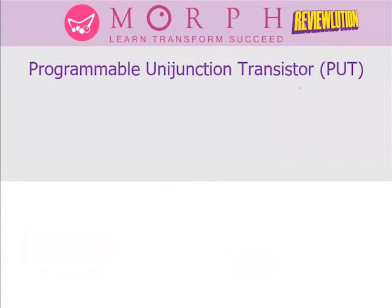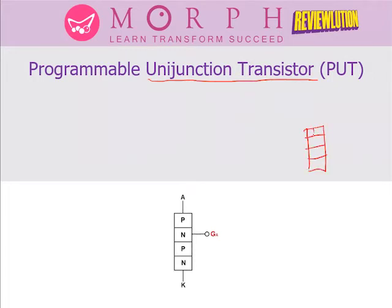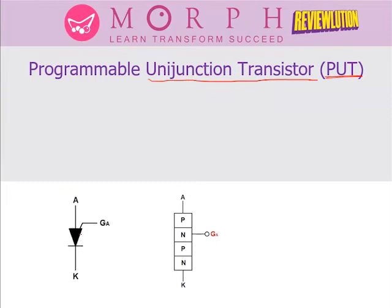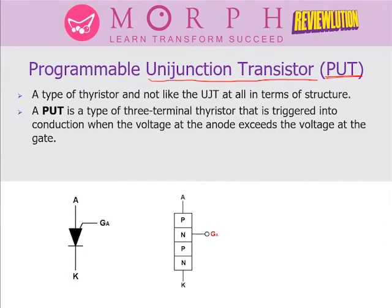Now let's move on to the PUT — Programmable UJT. Even though it is referred to as a UJT, its construction is really different; it's actually a thyristor. A PNPN thyristor with no gate is a Shockley. Add a gate at one end and it becomes an SER; add a gate at the other end and it becomes an SCS. Remove the anode gate and leave the cathode gate — that's an SER. The PUT has its gate on the anode side. So schematic symbols are easy once you're familiar with thyristor configurations.